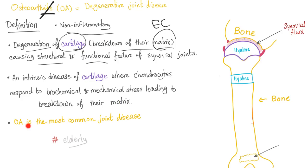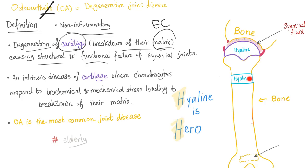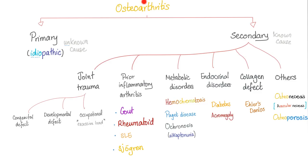Osteoarthritis is the most common joint disease and it's a disease of the elderly. The type of cartilage at the articular surface is hyaline. Osteoarthritis is divided into primary and secondary. Primary osteoarthritis has an unknown cause — we call it idiopathic.